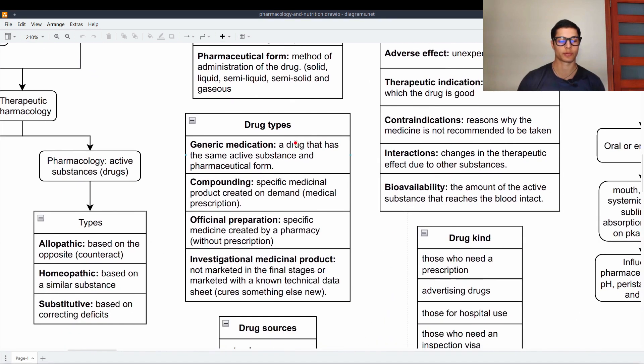Then we have drug types. We have the generic medication which is a drug that has the same active substance and pharmaceutical form. Compounding which is a specific medicinal product created on demand and you need the medical prescription for it. Then we have the official preparation which is a specific medicine created by a pharmacy without prescription. And then we have also investigational medicinal products which are not marketed in the final stages or they are marketed with unknown technical data sheet and we discovered that it cures something else as well.